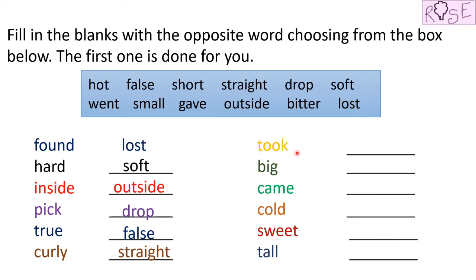The next word is took. I took my medicine. The opposite of took will be gave — I gave medicine to my father. Gave. Next word is big. The elephant is so big, and its opposite is small. The ant is small.